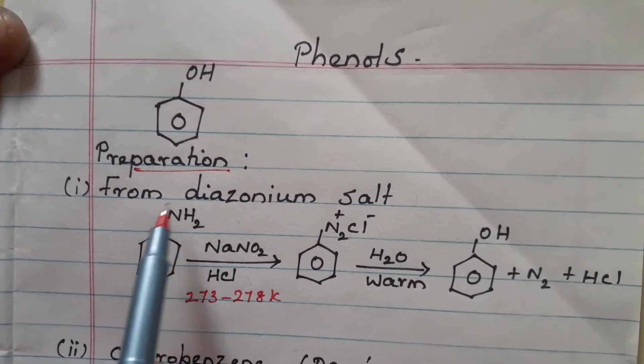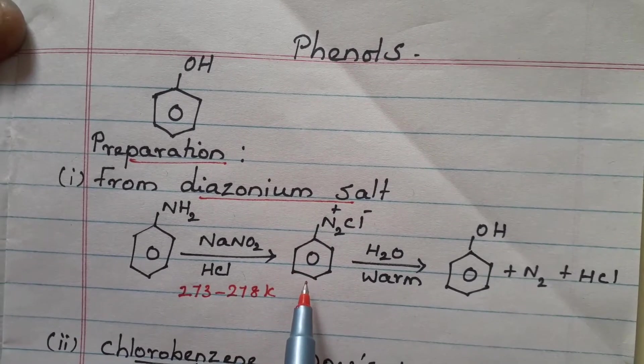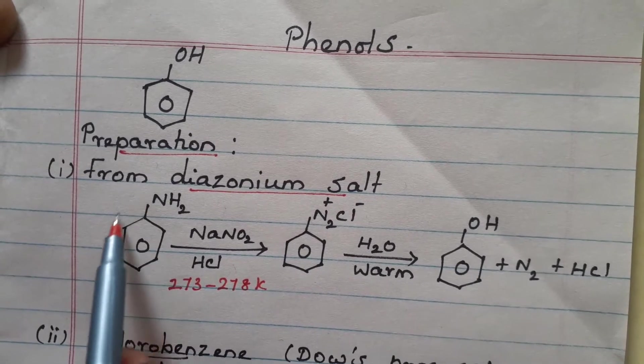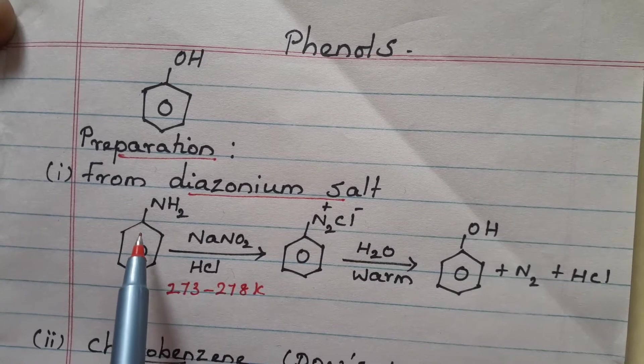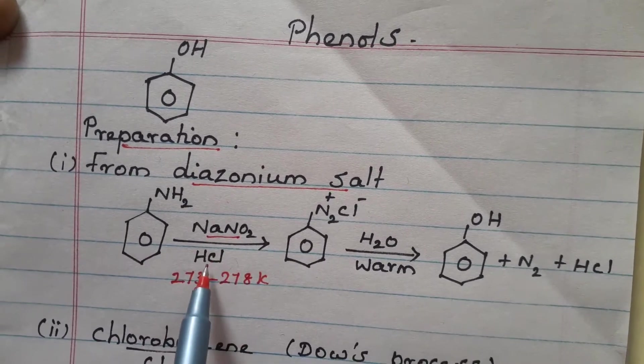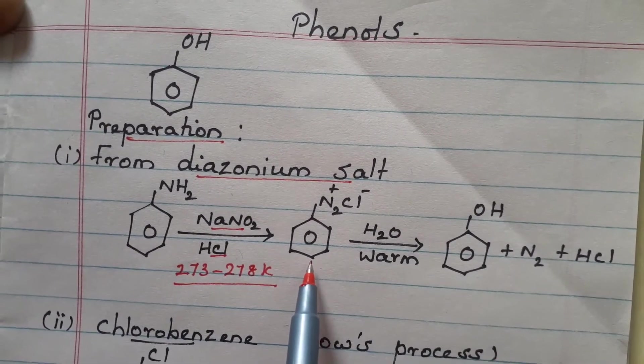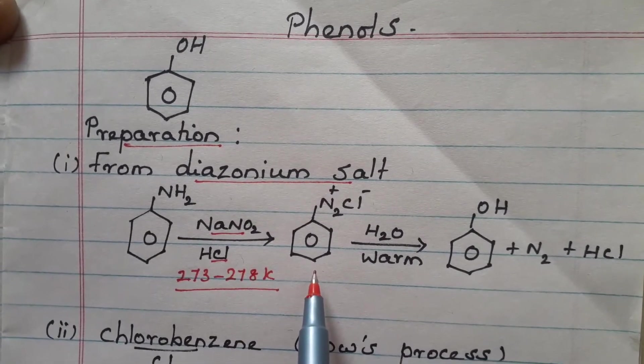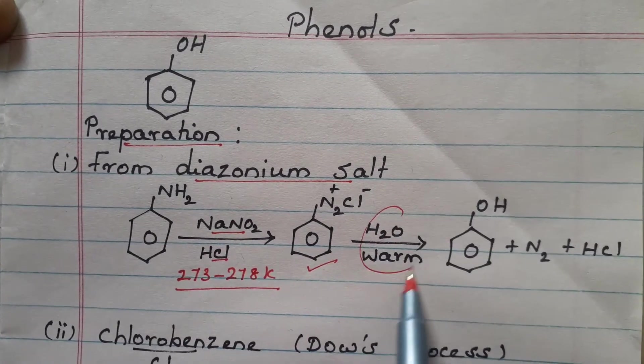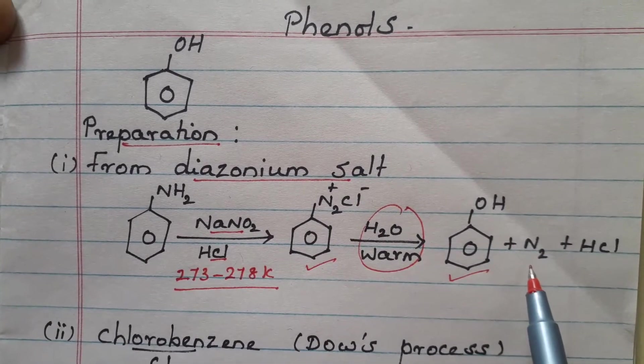First, let us see preparation of phenol from diazonium salt. We need to prepare diazonium salt by taking a primary aromatic amine. An example is aniline, C6H5NH2. When it is treated with sodium nitrite NaNO2 and HCl at 273 to 278 Kelvin, it produces benzene diazonium chloride, C6H5N2Cl. When this benzene diazonium chloride is treated with warm water, it will produce phenol C6H5OH plus N2 plus HCl.